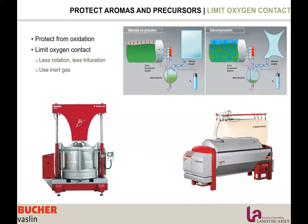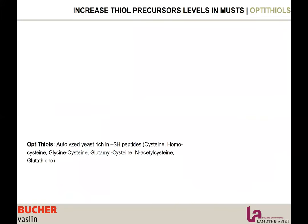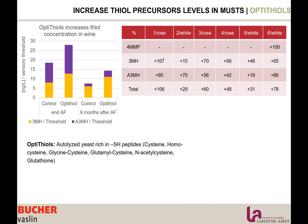For more information on this equipment, please feel free to email me. The next step after extracting is to increase the thiolic precursor level in the must. For this, there are products rich in sulfur peptides — autolyzed yeast rich in sulfur peptides, meaning rich in cysteine, homocysteine, glycine-cysteine, glutamine-cysteine, acetylcysteine, and glutathione. These can be used at inoculation as yeast nutrition to enhance the amount of precursors. I would like to show you some trial results on Optitiol, which are quite impressive.